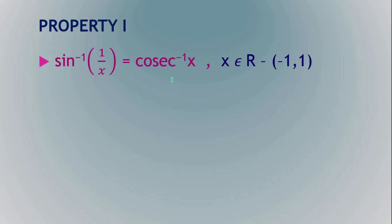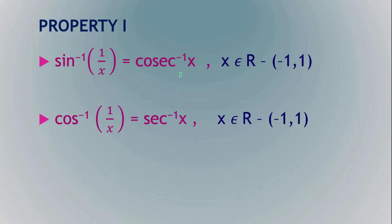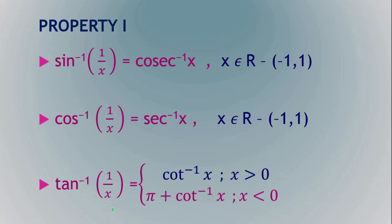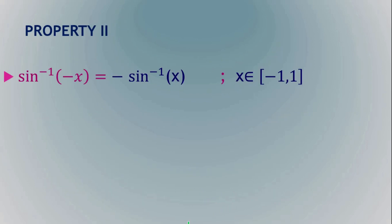The next property: sin⁻¹(1/x) can be written as cosec⁻¹(x), since sin θ is the reciprocal of cosec θ. Similarly, cos⁻¹(1/x) = sec⁻¹(x). For tan⁻¹(1/x), there are two conditions: it equals cot⁻¹(x) if x is greater than 0, and π + cot⁻¹(x) when x is less than 0.